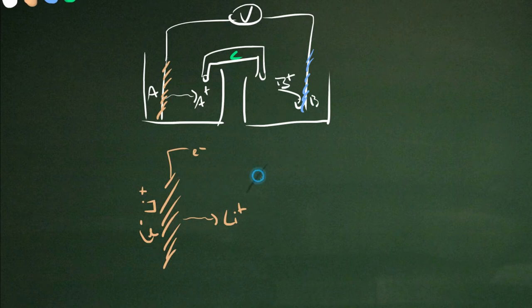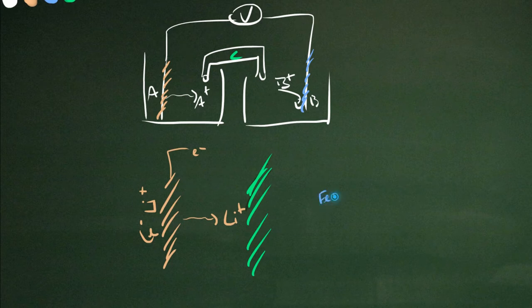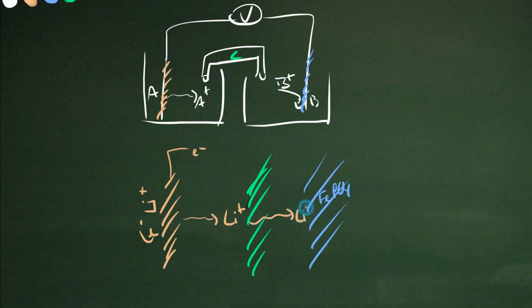You have some gel membrane that sits between all of that. And then, on the other side, you have something like iron phosphate.